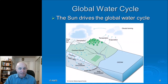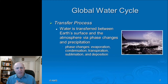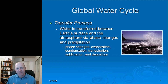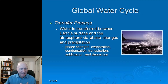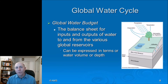Another process is transpiration — in fact evapotranspiration is where plants bring in water through the soil via roots, carry out photosynthesis, and release water vapor back into the atmosphere. There is also a transfer process between Earth's surface and the atmosphere via phase changes in water: evaporation, condensation, sublimation, deposition, and transpiration.